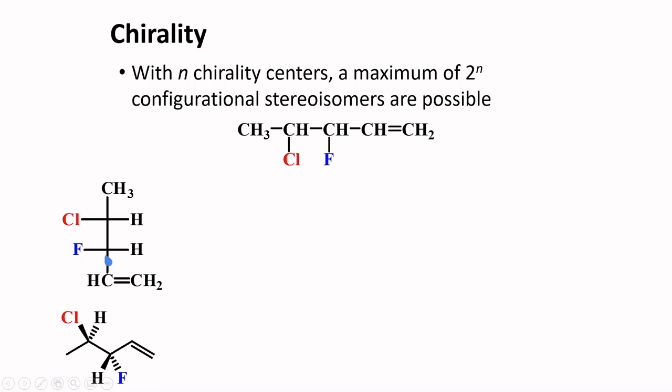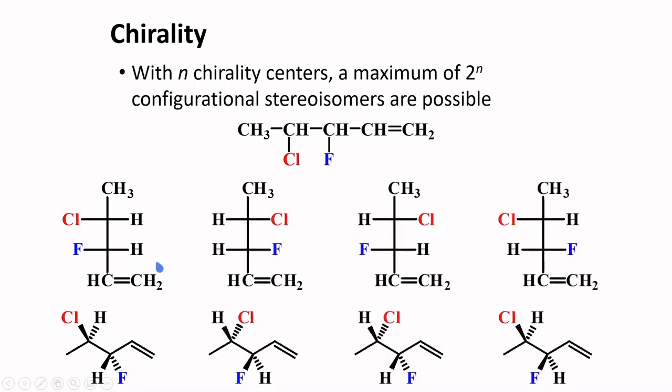For example, this chirality center. If we consider this chlorine close to the viewer, we can rotate this molecule 90 degrees counterclockwise, and you will obtain this arrangement with chlorine being on top and close to the viewer. Fluorine, on the other hand, needs to be rotated in such a way that it will be oriented far away from the viewer. Starting from this stereoisomer, we can generate three more structures of which the Cl and the F are oriented in different positions.